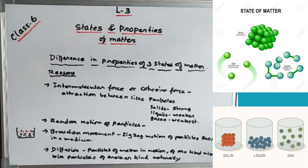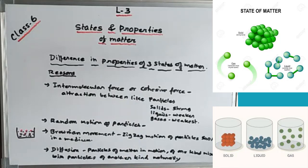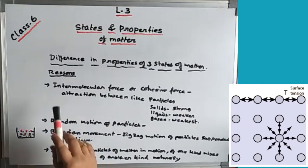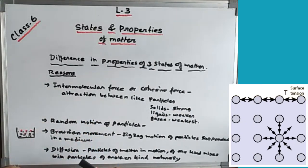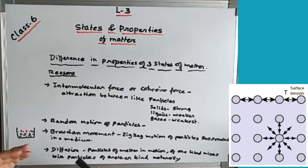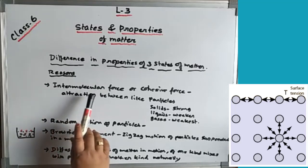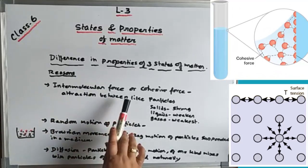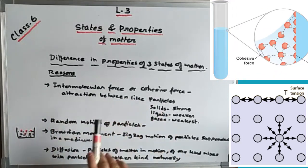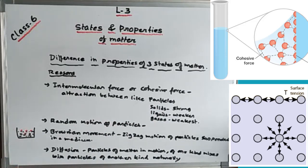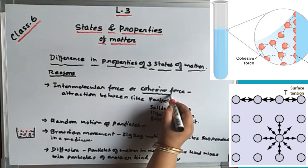The first reason is intermolecular force of attraction, also known as cohesive force. Any matter is made of particles or molecules, and these molecules have space between them. Solid has minimum space, liquid has a little more than solid, and gas has the maximum space. Therefore, the intermolecular force of attraction in solid is very strong, in liquid it is weaker, and in gases it is the weakest.